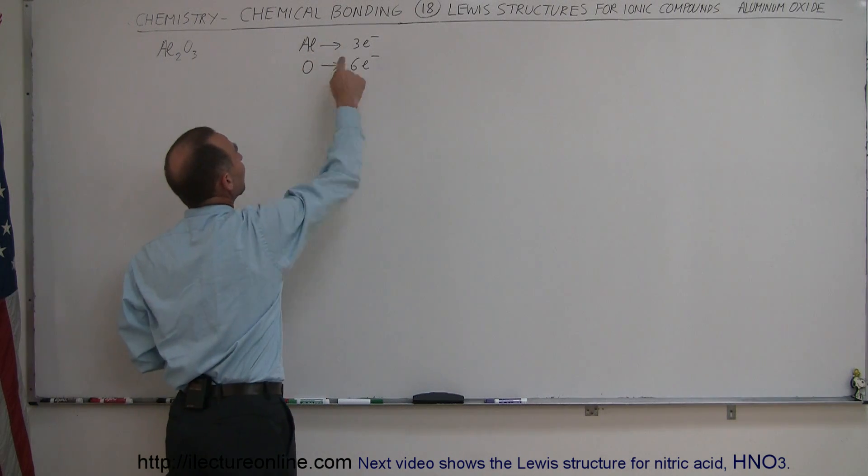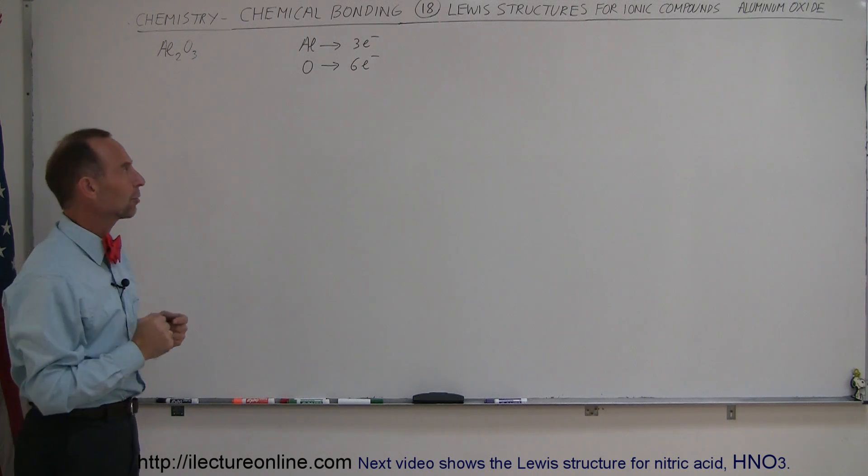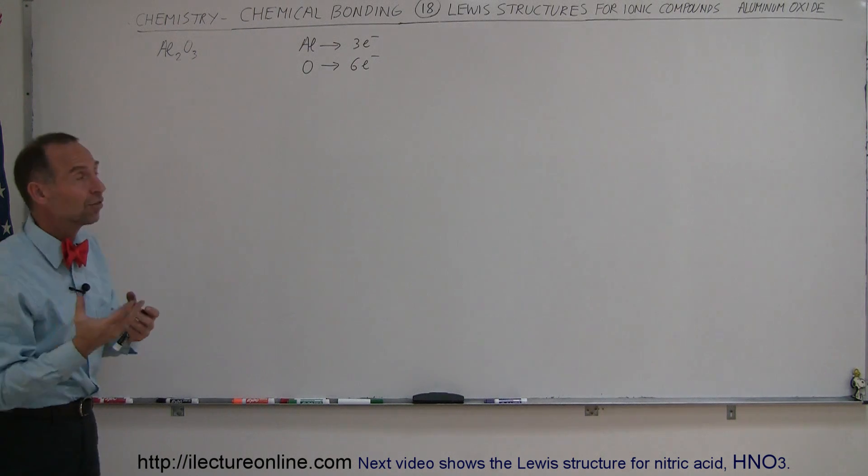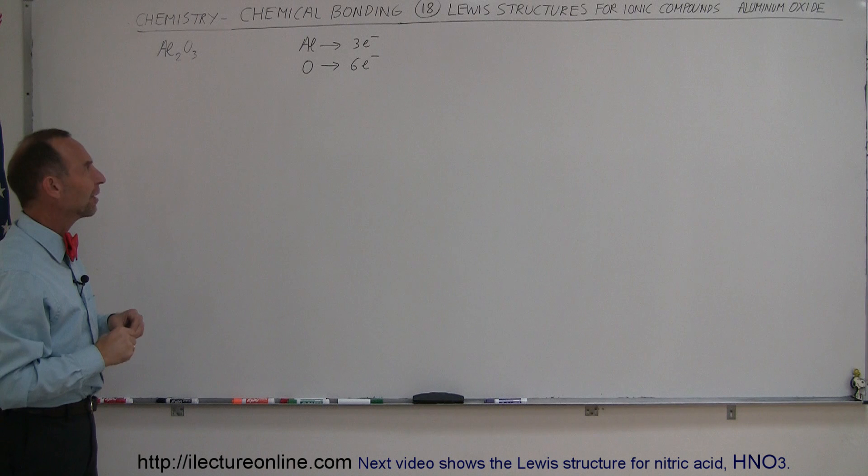First of all, aluminum has three valence electrons so the tendency for aluminum is to donate the three electrons. Oxygen has six valence electrons so it has a tendency of trying to grab two more and make a full set of eight valence electrons.